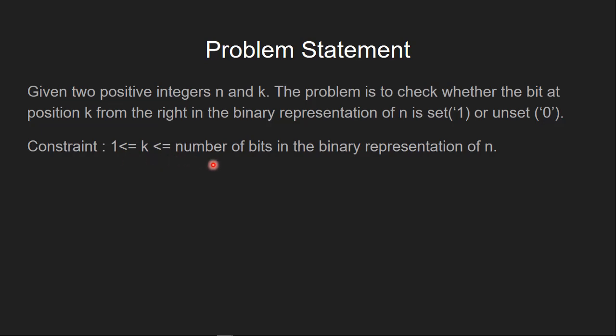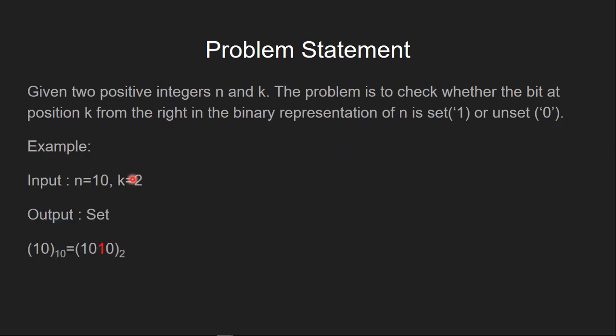Let's understand this using an example. If the number n equals 10 and the position k equals 2, then the output is set, because as we can see here in the binary representation of 10, the second bit is set.